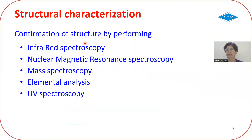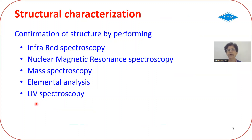The next term is structural characterization — how will you confirm the structure? R&D synthesizes the impurity, and analytical people confirm the structure using IR, NMR (proton NMR, carbon NMR), mass spectrometry, elemental analysis, and UV spectroscopy. These are the minimum techniques used, and some additional techniques can also be applied to confirm the structure of an impurity or an API.